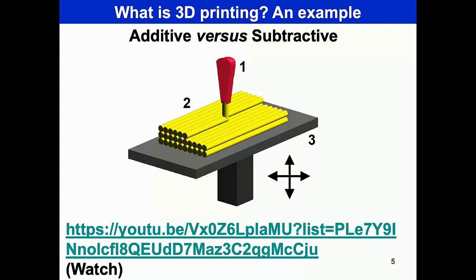In terms of subtractive manufacturing - if you are familiar with silicon technology, MEMS, etc. - you do a lot of work where the bulk is etched and after etching you obtain the final structure. That's a subtractive process: you have a bigger structure and cut it down to the desired shape. There is a YouTube link you can watch that describes what additive manufacturing is in some detail.